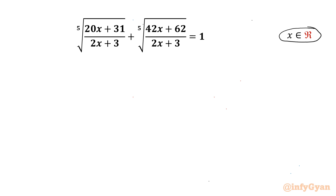Let's get started by noting that our denominator cannot be zero, so x cannot be equal to negative 3 over 2.